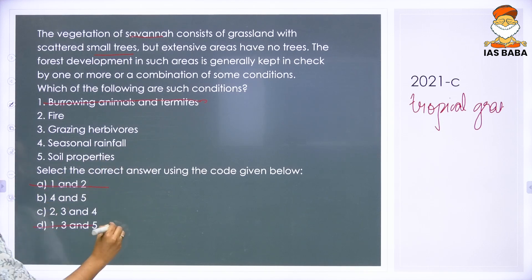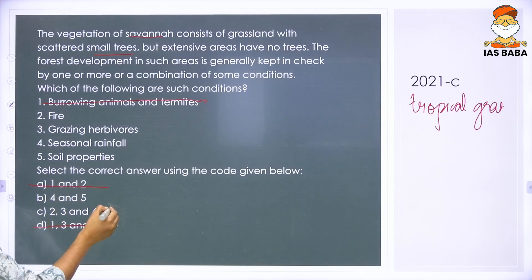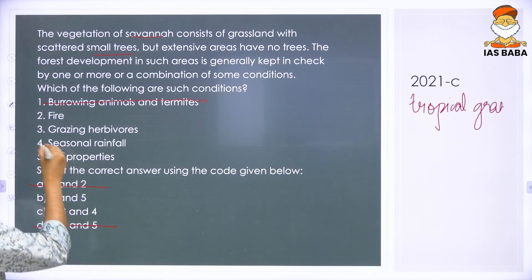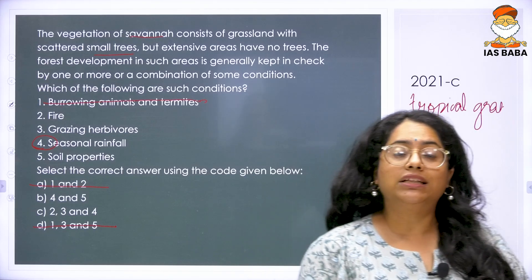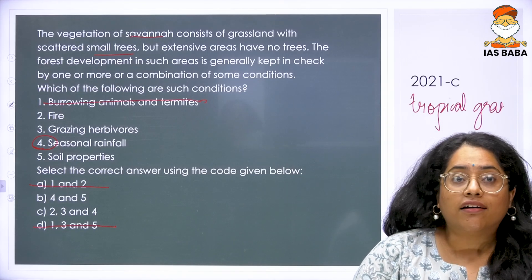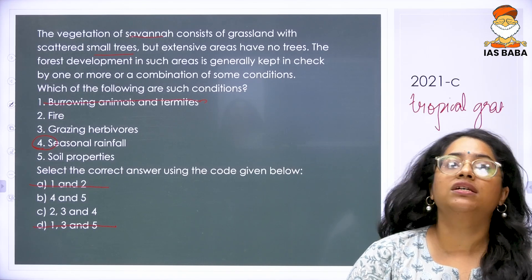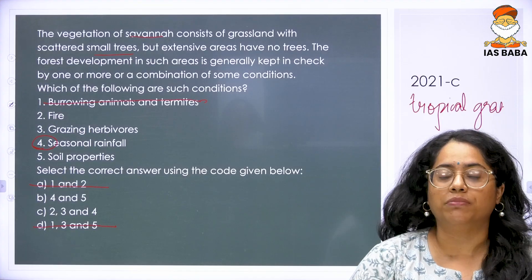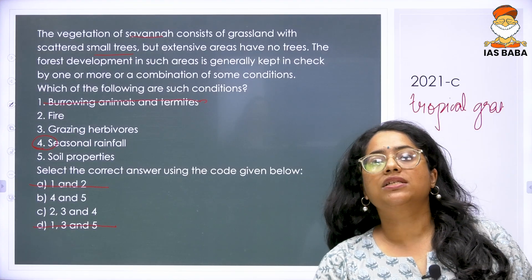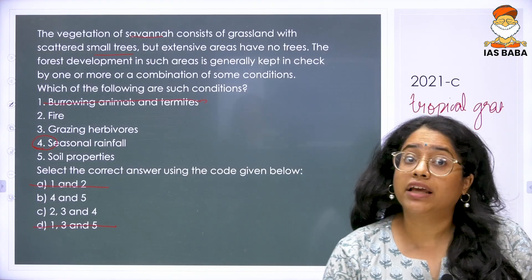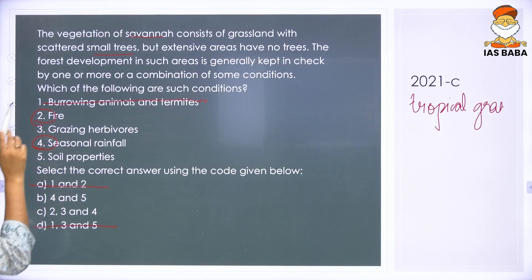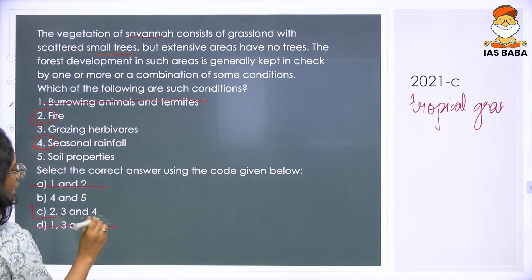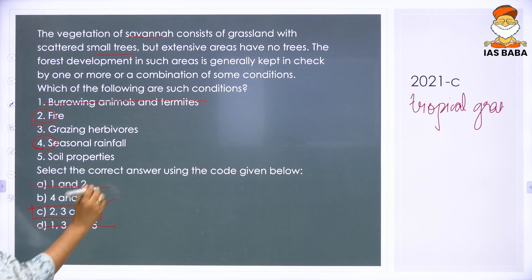When you eliminate one, you are left with B and C, which is options four and five, and two, three and four — meaning four is something common to both. Now let us read the rest of it: fire, grazing herbivores, seasonal rainfall, and soil properties. Soil properties is common to all. Fire is something we already discussed. So we are looking for an option which has two and four. The answer here is two, three and four.